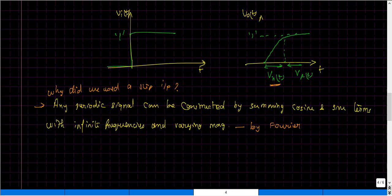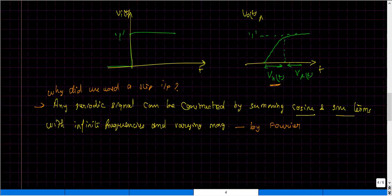This video gave a clear picture that a square wave or any periodic signal can be constructed as a summation of cosine and sine terms of different frequencies, covering almost all infinite frequency ranges with different magnitudes. Since a step input is a part of a square wave, it is equally represented by an infinite summation of sine and cosine terms. That is why we use a step input — to exercise all the frequencies involved in the signal.